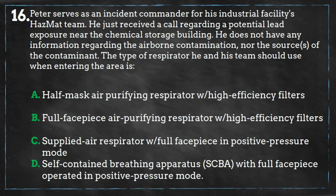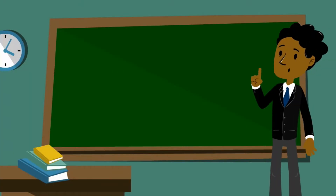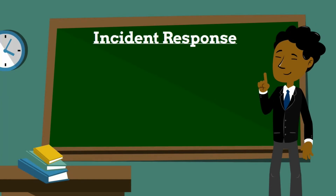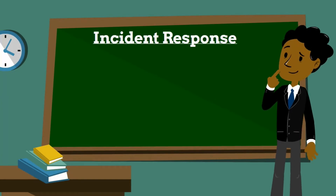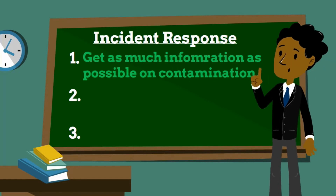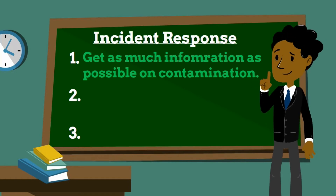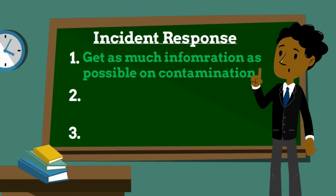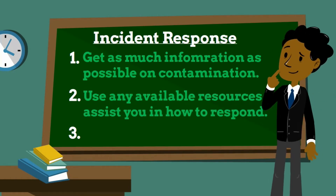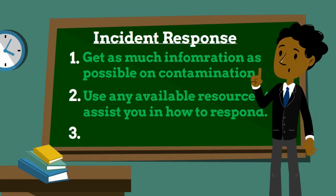Have you finished solving the problem? Let's see if you got the correct answer. If you ever need to respond to any type of environmental exposure, there are three things you need to keep in mind. First, you need to get as much information on the contaminant, the area of exposure, and any other information you can obtain at the time.